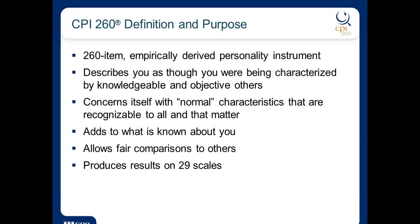The CPI 260 is an empirically derived instrument — the descriptions that come from being high or low on a scale actually come from research data. The purpose of the CPI is to describe you as if you were being described by a group of knowledgeable and objective others. My job is to describe you back to you, and maybe the organization, in terms of your strength and style, and against that context propose any developmental opportunities that might be apparent.